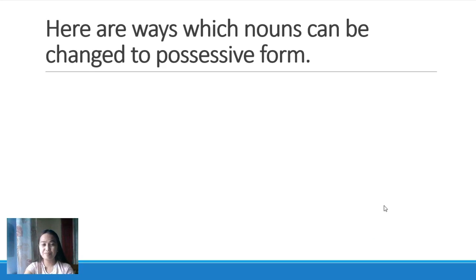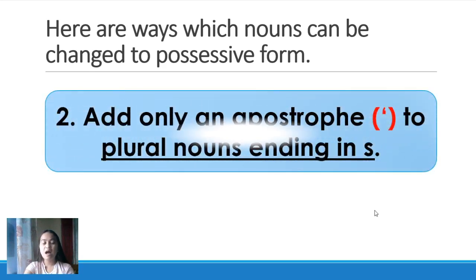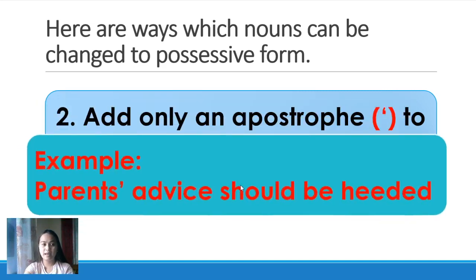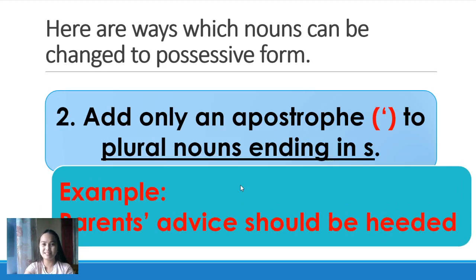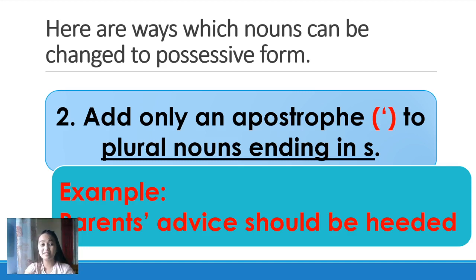Number two: add only an apostrophe to plural nouns ending in S. Example — 'parents.' Parents is plural because we have mother and father. 'Parents' advice should be heeded.' We add only an apostrophe since parents already ends in S.